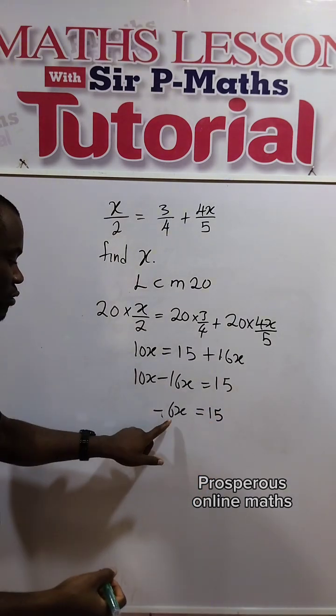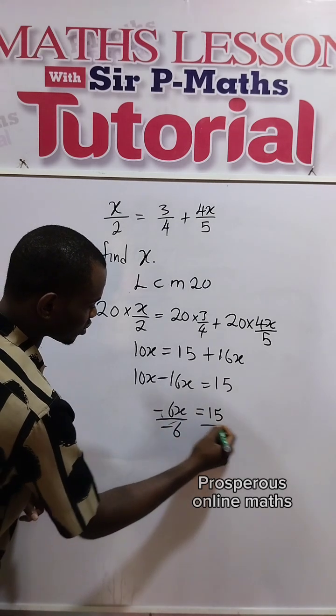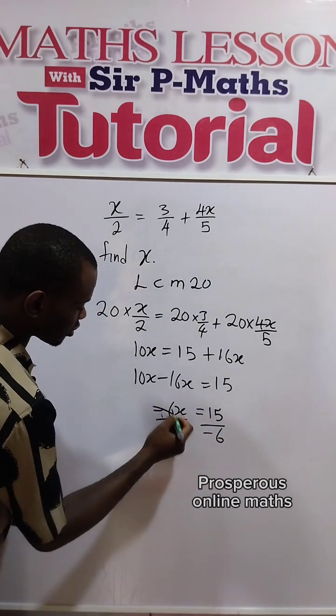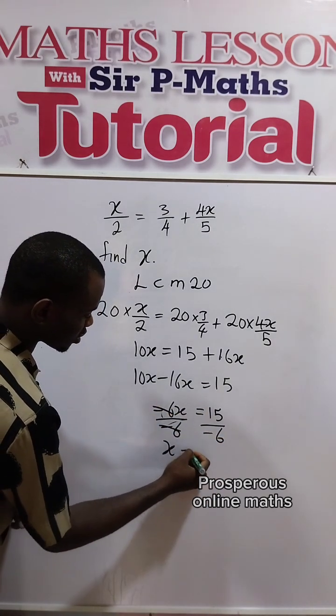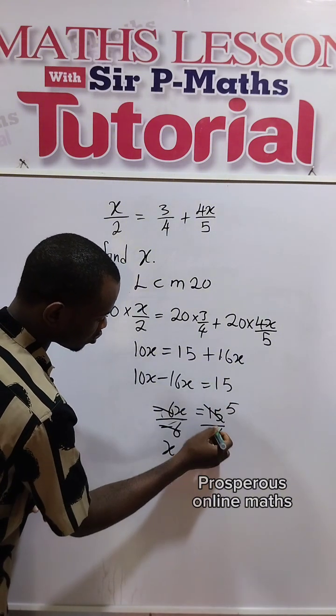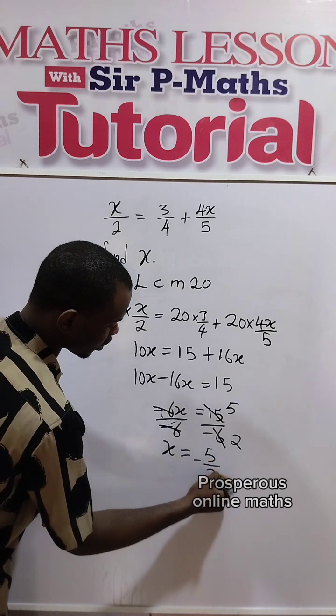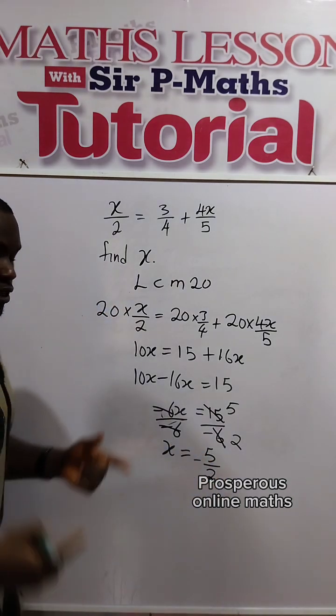So we divide. Divide both sides by negative 6. We have minus 6 divided by minus 6. Minus 6 will take away minus 6. So x should be equal to... 3 will divide there to give us 5, 3 divided there to give us 2. So we have negative 5 over 2, because here is a negative.